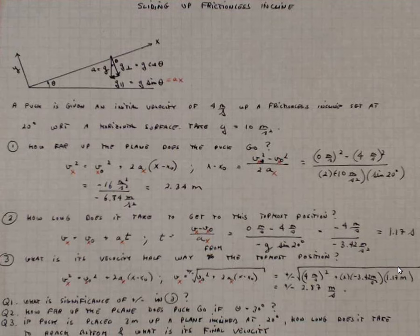That's going to give me minus 4 meters per second over minus 3.42 meters per second squared. And that is 1.17 seconds. That's how long it takes to get to the topmost position.